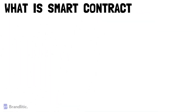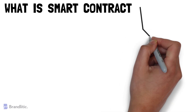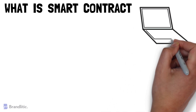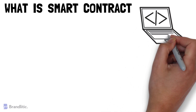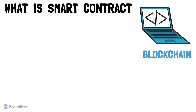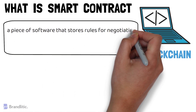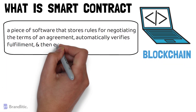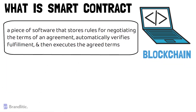First, let's understand what is a smart contract. A smart contract is similar to a contract in the physical world, but it's digital and is represented by a tiny computer program which is stored inside the blockchain. More specifically, a smart contract is a piece of software that stores rules for negotiating the terms of an agreement and automatically verifies fulfillment and then executes the agreed terms.